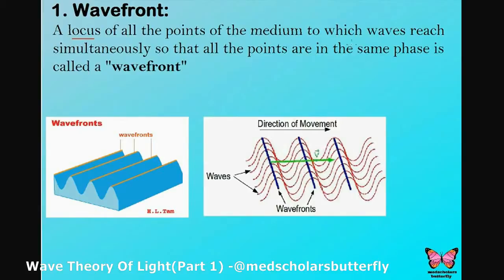Wavefront: a locus of all the points of the medium to which waves reach simultaneously, so that all the points are in the same phase, is called a wavefront. Locus means it is a collection of all the points. All the points reach simultaneously and they lie in crest or trough formation — this is known as a wavefront.